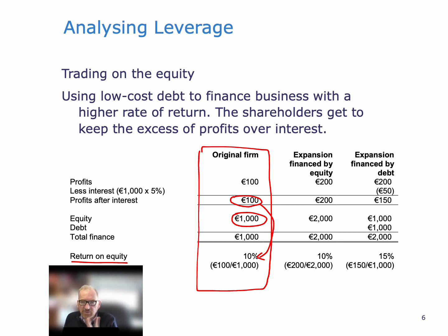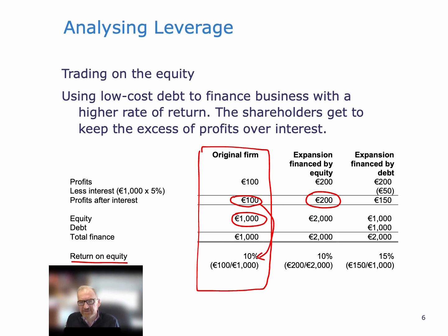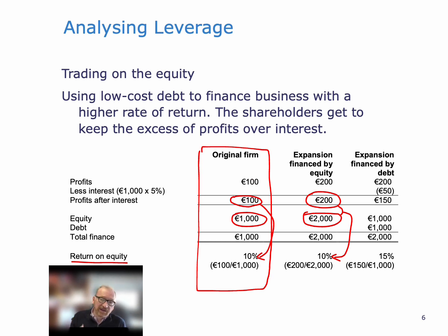We're now going to look at two alternative situations. The first one is that the firm expands — it doubles its size — and it finances this expansion using equity. That would mean that the profits would double to 200. We'd need more assets and all the rest to do that, so equity also doubles to 2,000. And when we take profits over equity, we still get 10%. That's because we have scaled up the firm — it's twice as big, but the financing and mechanics of how the firm works are the same. We've just made it bigger without disrupting the way the finances of the firm work.